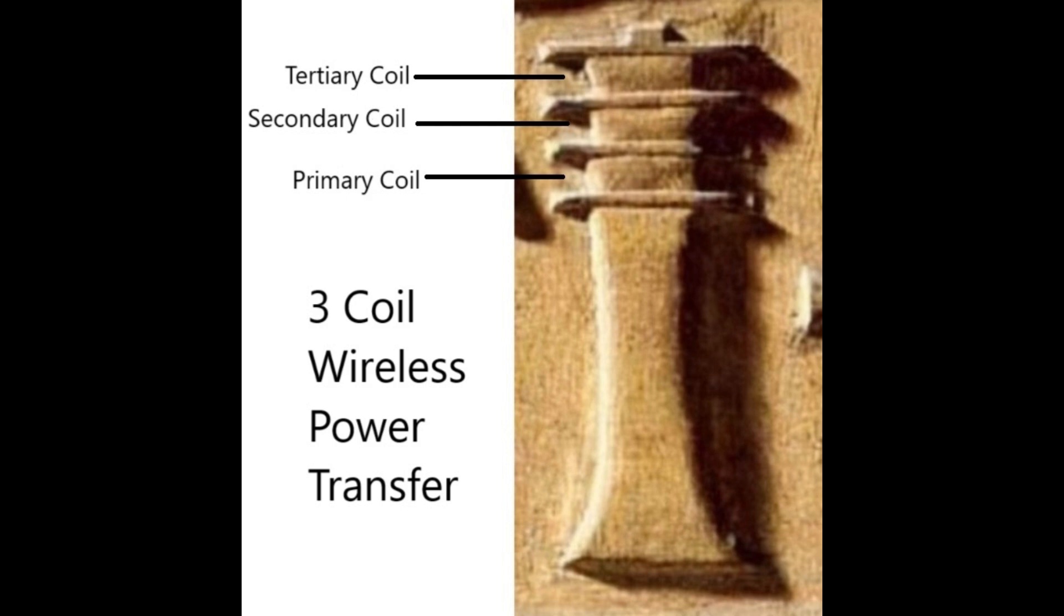The secondary coil captures the field and begins to resonate in harmony with the primary coil. This enhances the magnetic field and facilitates an efficient power transfer. The tertiary coil captures the enhanced field and transfers it to any device that's either brought within its field or has a receiving mechanism.